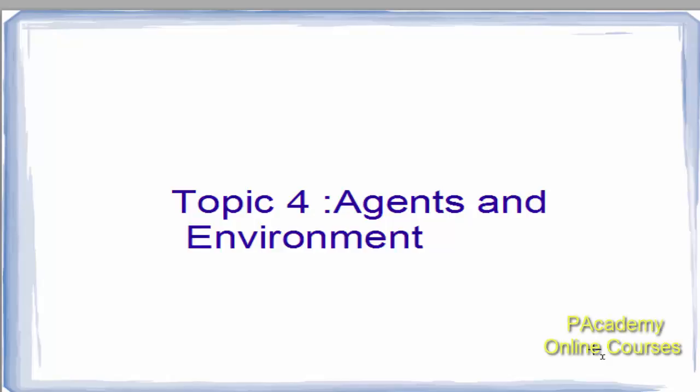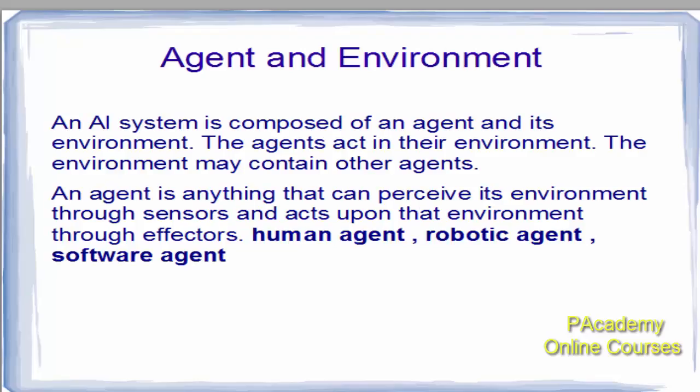Topic 4 on our list is agents and environments. An AI system is composed of an agent and its environment. The agent acts in the environment, and the environment may contain other agents. An agent is anything that can perceive its environment through sensors and act upon that environment through effectors.